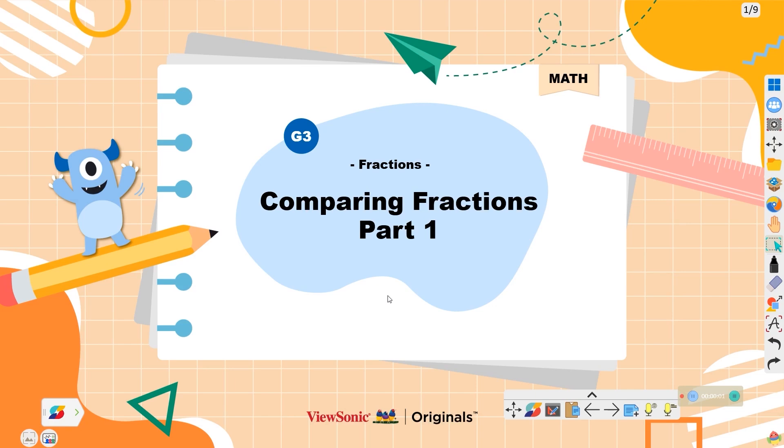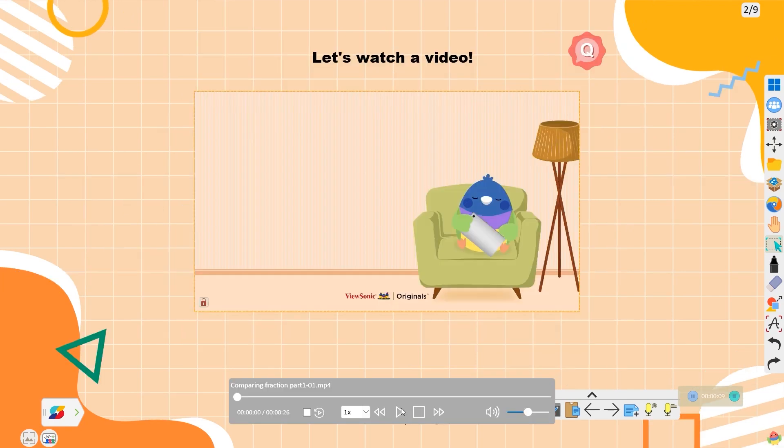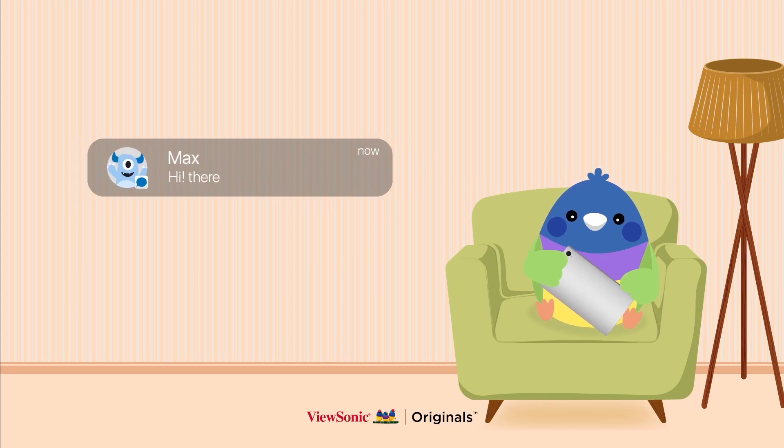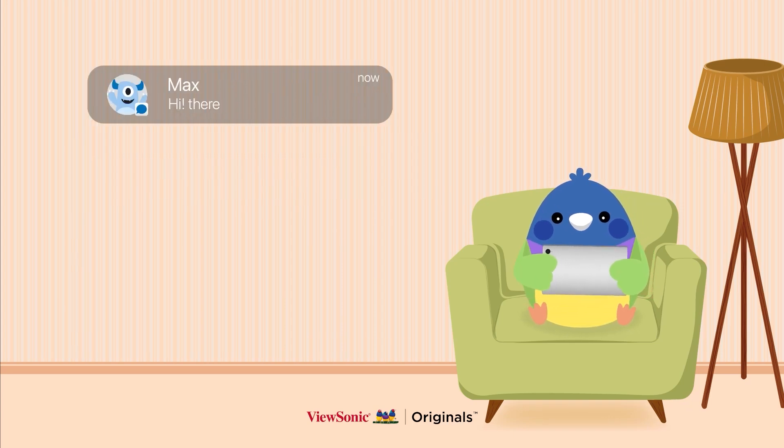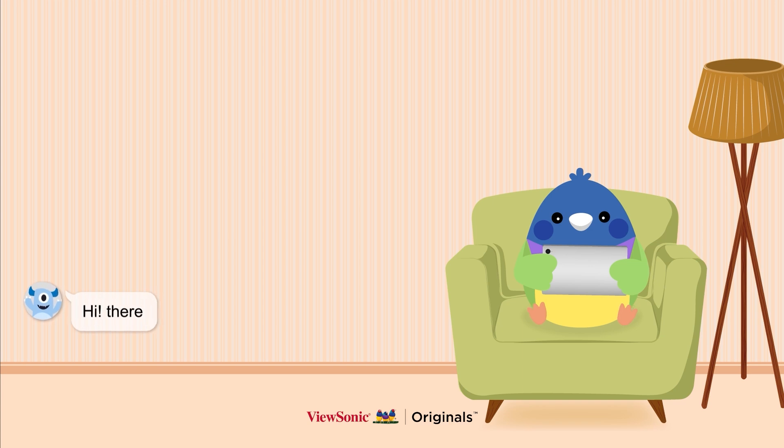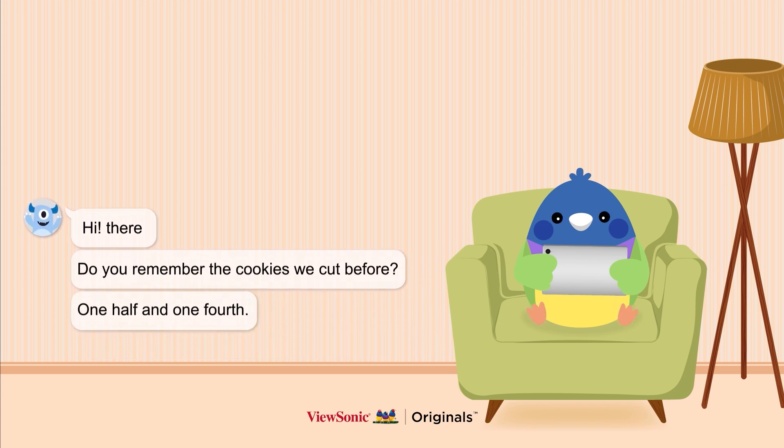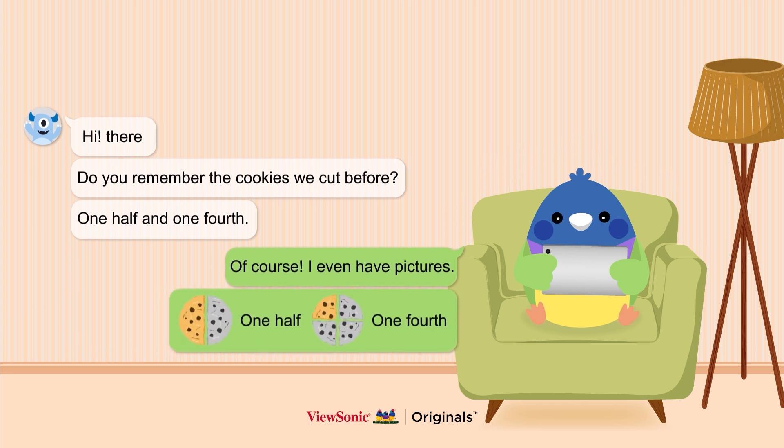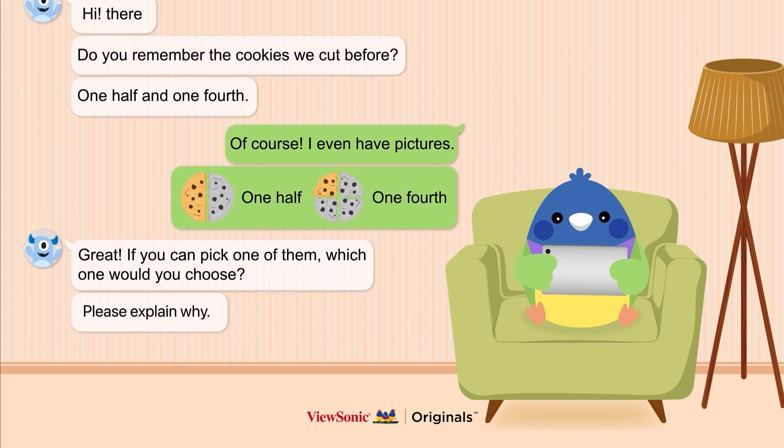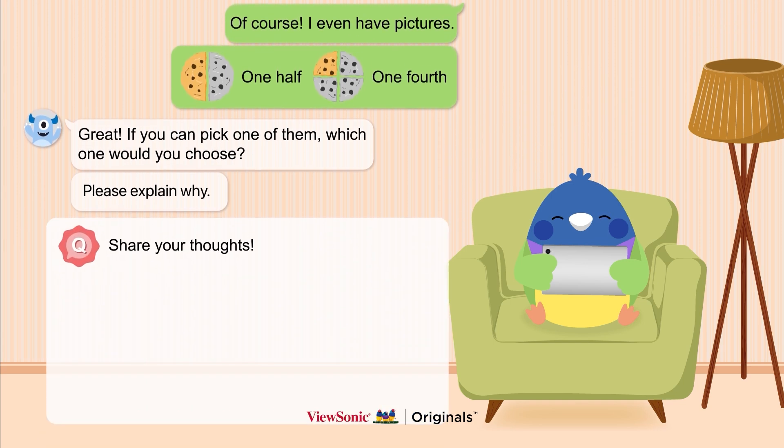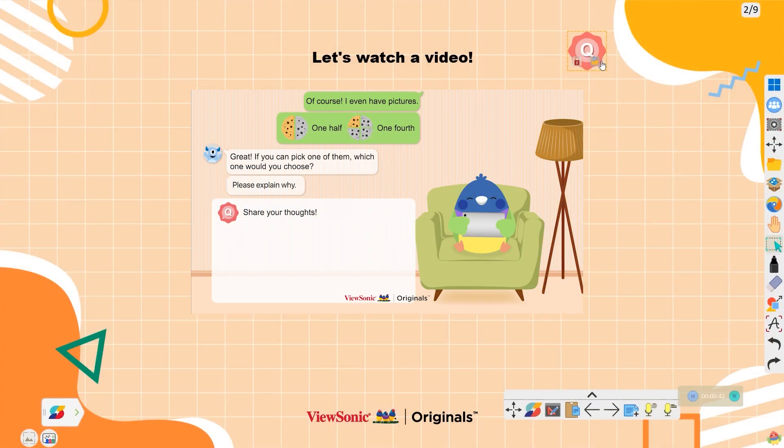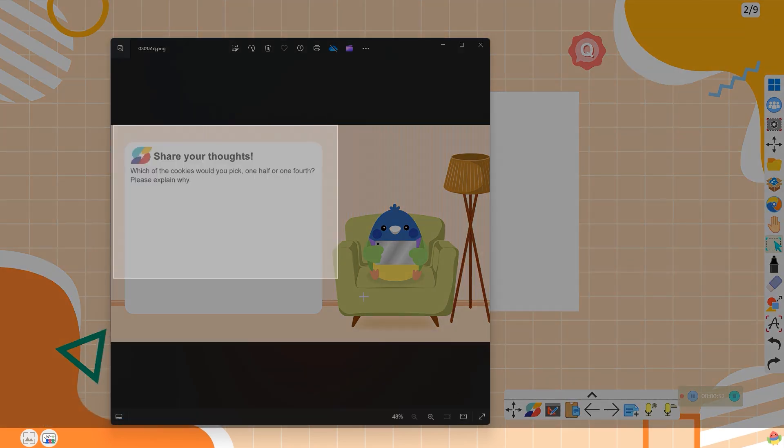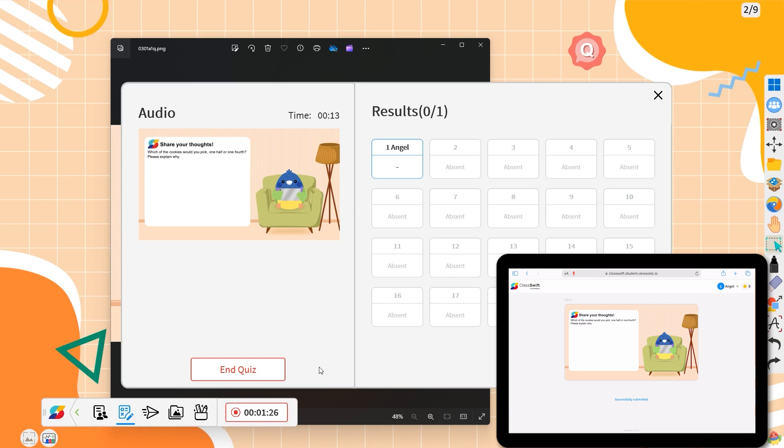Comparing Fractions Part 1. Let's start by watching an Originals animation. Think about if you would like one-half of a cookie or one-fourth of a cookie. Explain your choice. Use ClassWhip to assign the question and students can upload their audio responses.